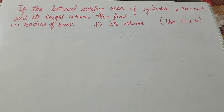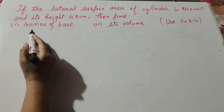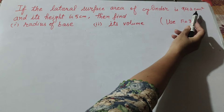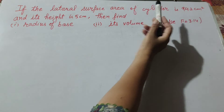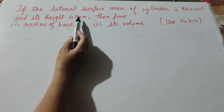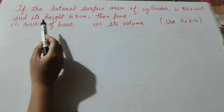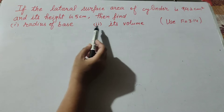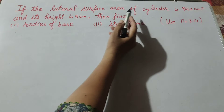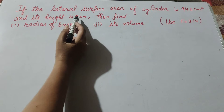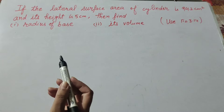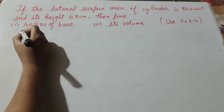Hello friends, welcome to my channel. In this video we discuss: if the lateral surface area of a cylinder is 94.2 centimeter square and its height is 5 centimeter, then find the radius of the base and its volume. Given is the lateral surface area of the cylinder and height of the cylinder; we find the radius of the base and its volume.